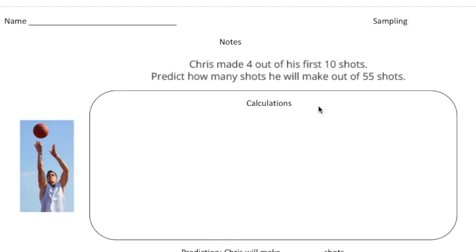All right, here's the question. It says Chris made four out of his first 10 shots. Predict how many shots he will make out of 55 shots. So the first thing you have to ask is how big is the sample? Well, right here, four out of 10 shots, that's the sample. So Chris has four makes out of 10 total shots.